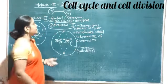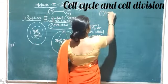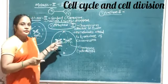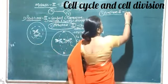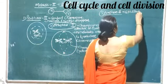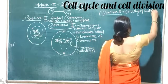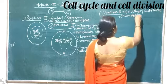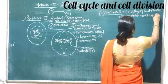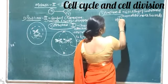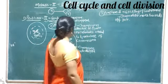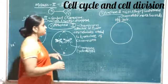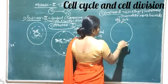Then the third stage is Anaphase II. In Anaphase II, chromosome separation from the centromere takes place — the splitting of the centromere occurs. The chromatids then move towards opposite poles. Looking at a diagram, the chromatids that are present here will separate, moving toward opposite centrioles.